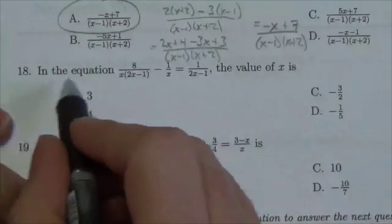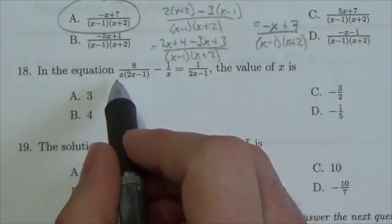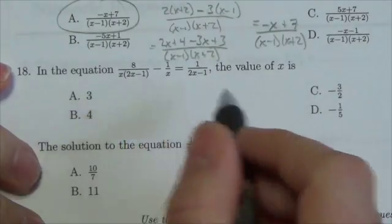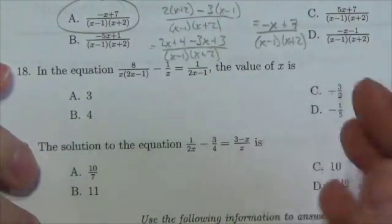This question, we read here that in the equation 8 over x times 2x minus 1, minus 1 over x equals 1 over 2x minus 1, the value of x is what?